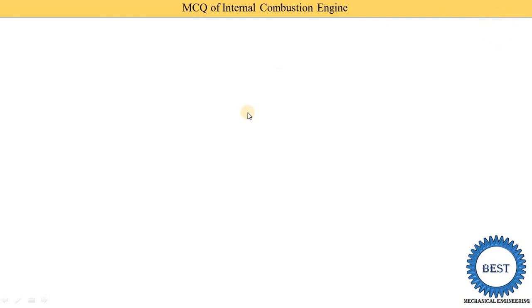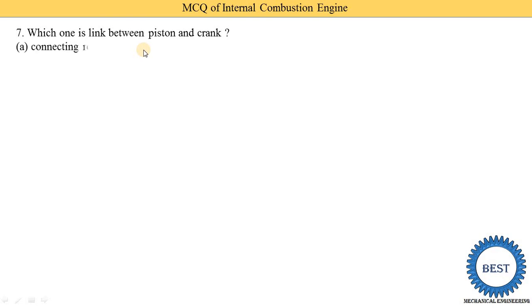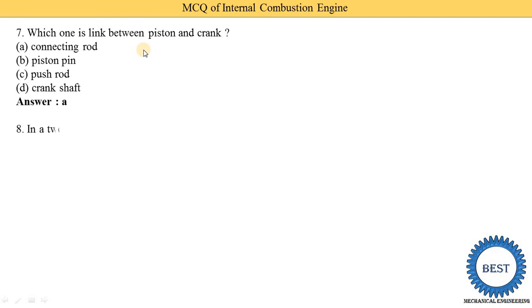Next MCQ: which one is a link between the piston and crank? Option A: connecting rod, option B: piston pin, option C: push rod, option D: crankshaft. The piston and crank are connected by the connecting rod, so the correct answer is option A — the connecting rod.